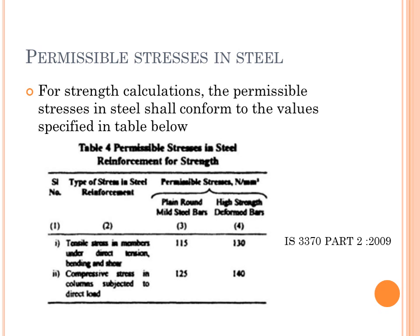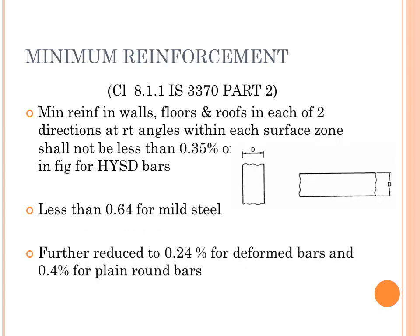The minimum reinforcement as per clause 8.1.1 of IS 3370 states that for walls, floors, and roofs in each of two directions, reinforcement within each surface zone shall not be less than 0.35% of the surface zone cross-section for high strength deformed bars, and not less than 0.64% for mild steel reinforcement bars. The minimum reinforcement can be further reduced to 0.24% for deformed bars and 0.4% for mild steel bars.